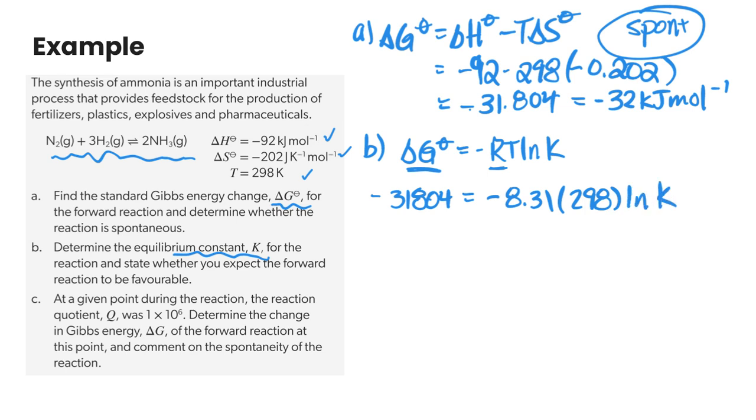So if we rearrange this and then we solve for K, we should get 3.8 times 10 to the 5. It asks us to also state whether we expect the forward reaction to be favorable. We have a really large K so yes definitely the forward reaction is very favorable.